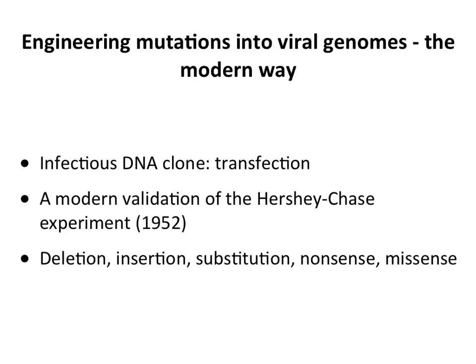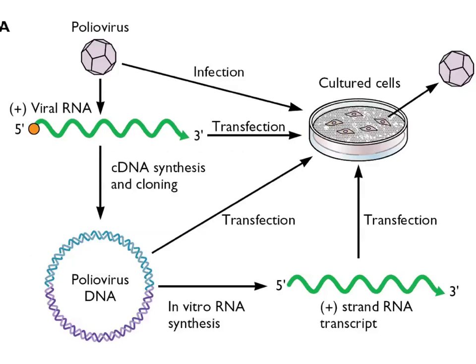Today, if we want viral mutants, we don't use chemical mutagenesis — we have DNA copies of virtually every virus genome, and we can alter them precisely using restriction enzymes and PCR. We call these infectious DNA clones. They are a validation of the Hershey-Chase finding: we take purified DNA, put it in cells, and show it gives rise to virus. You can introduce any mutation you want in the DNA and recover viruses with various phenotypes.